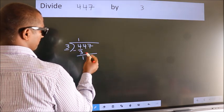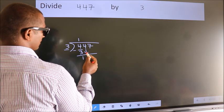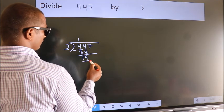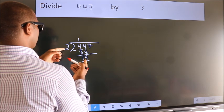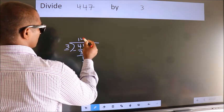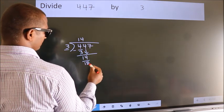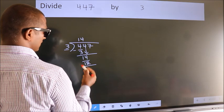After this, bring down the beside number. So, 4 down. So, 14. A number close to 14 in 3 table is 3 fours 12. Now, we subtract. We get 2.